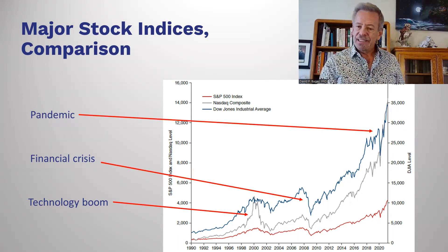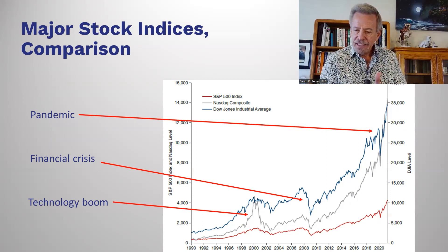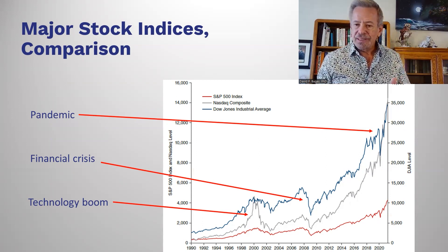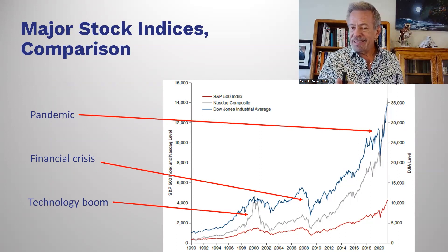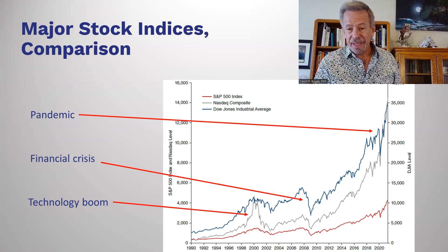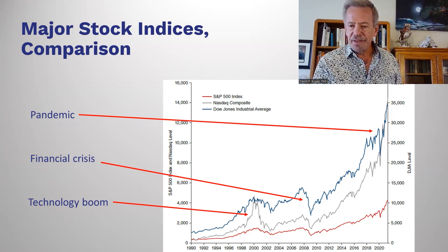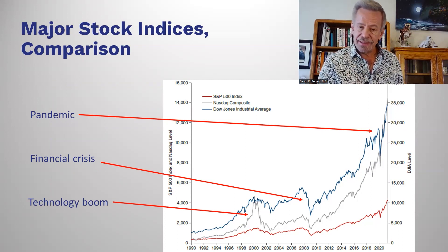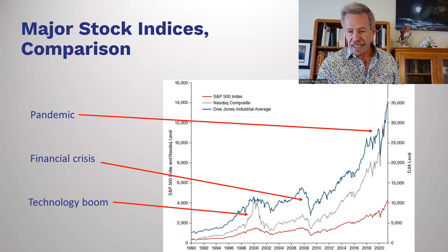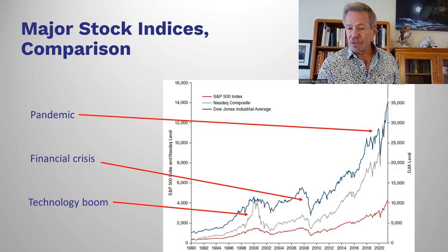You can see the S&P 500, the NASDAQ, and Dow Jones compared on this chart — from 1990 all the way past 2020. You can see what happened during the pandemic — that gigantic boom — but the pandemic operated differently for different indices. You'll see the Dow Jones didn't take as large a dent, while the S&P 500 was affected differently. Looking at the NASDAQ, it actually peaked much earlier than the others.